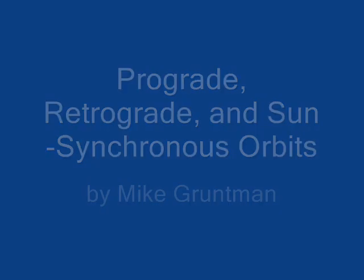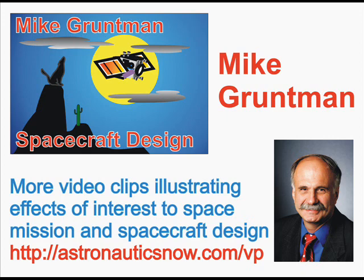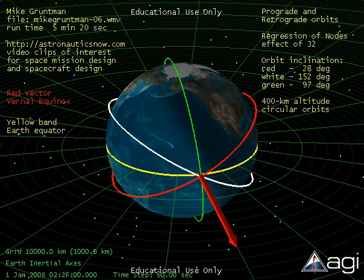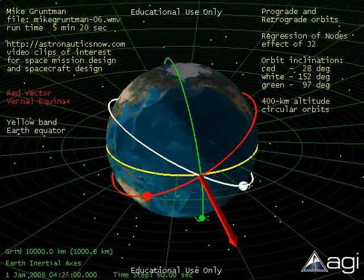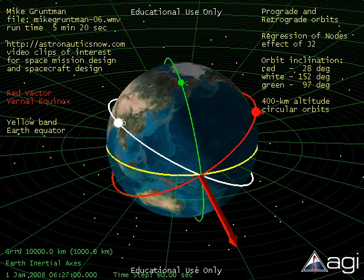Greetings, I'm Mike Gruntman. This video clip describes properties of prograde and retrograde orbits. More video clips illustrating other effects of interest to space mission design and spacecraft design can be found at the website astronauticsnow.com. The simulations are performed using AGI's STK.